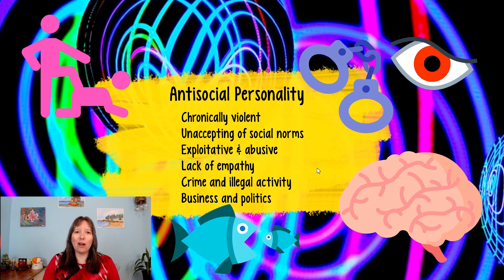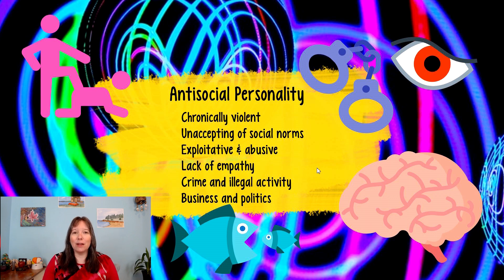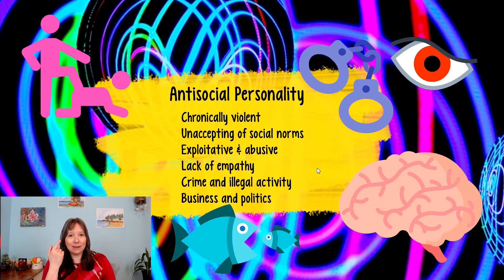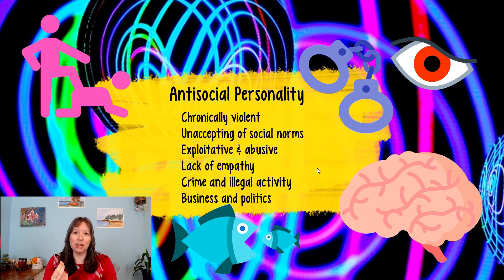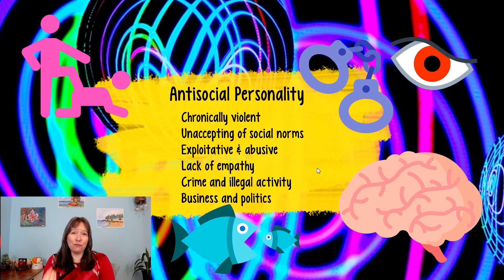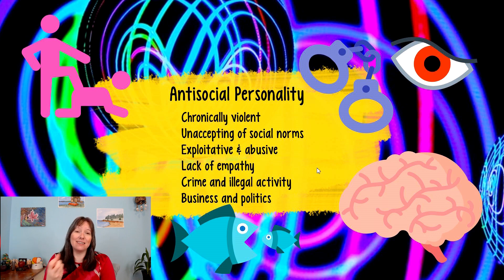Sometimes these describe our serial killers and massive villains. Sometimes they just describe our business CEOs and our politicians, which could be villains depending on which way you spin it. The amygdala in the brain tends to be much smaller in people with antisocial personality disorder and tends to not light up or be as active — and that's our fear center. People with antisocial personality disorder tend to not fear, not have empathy, and not have remorse for the violent and horrific acts that they do.